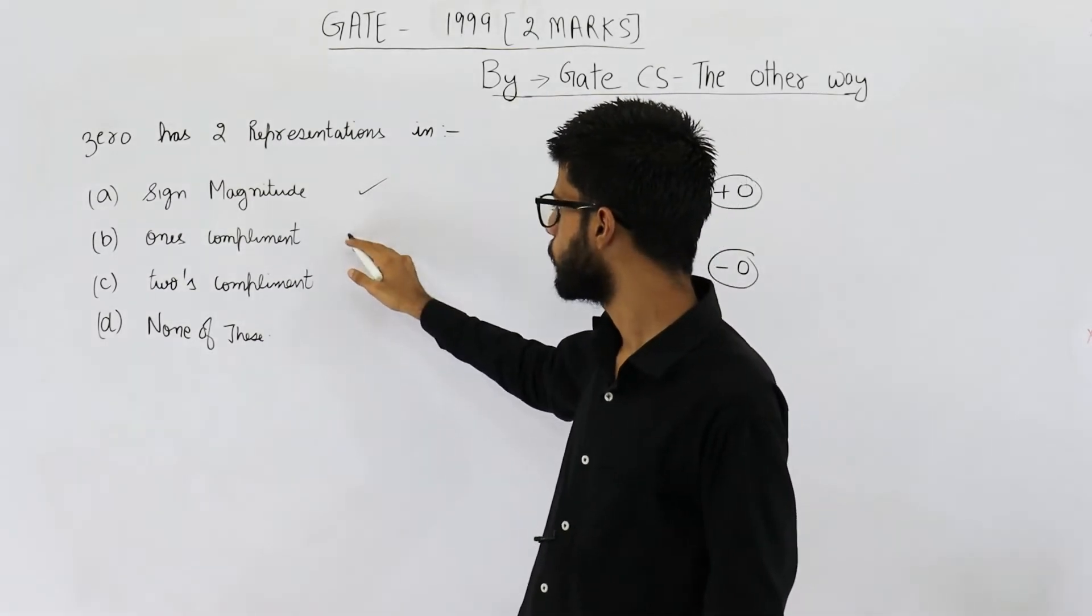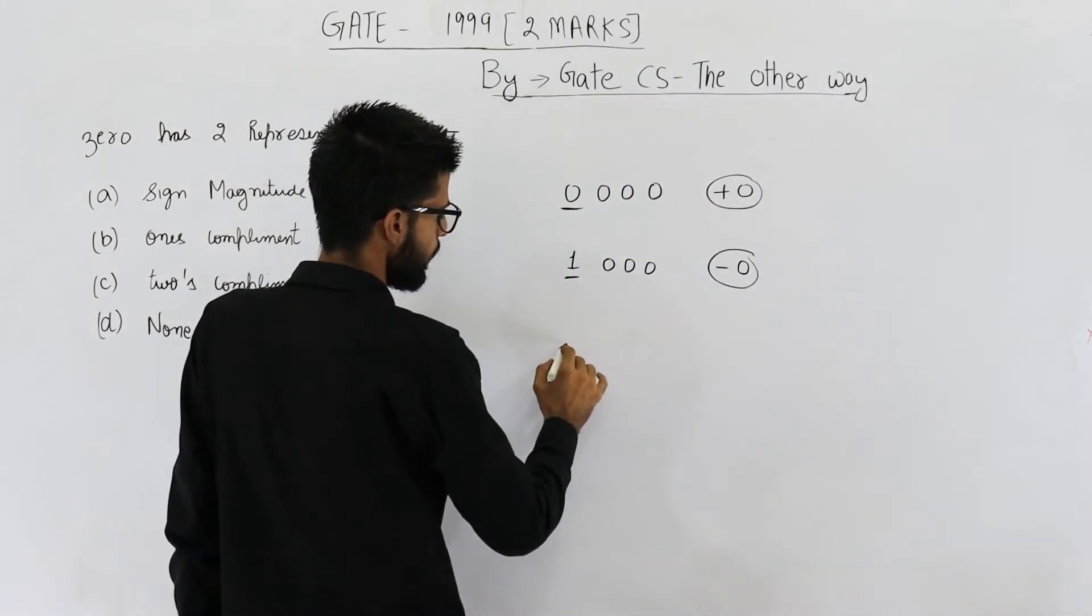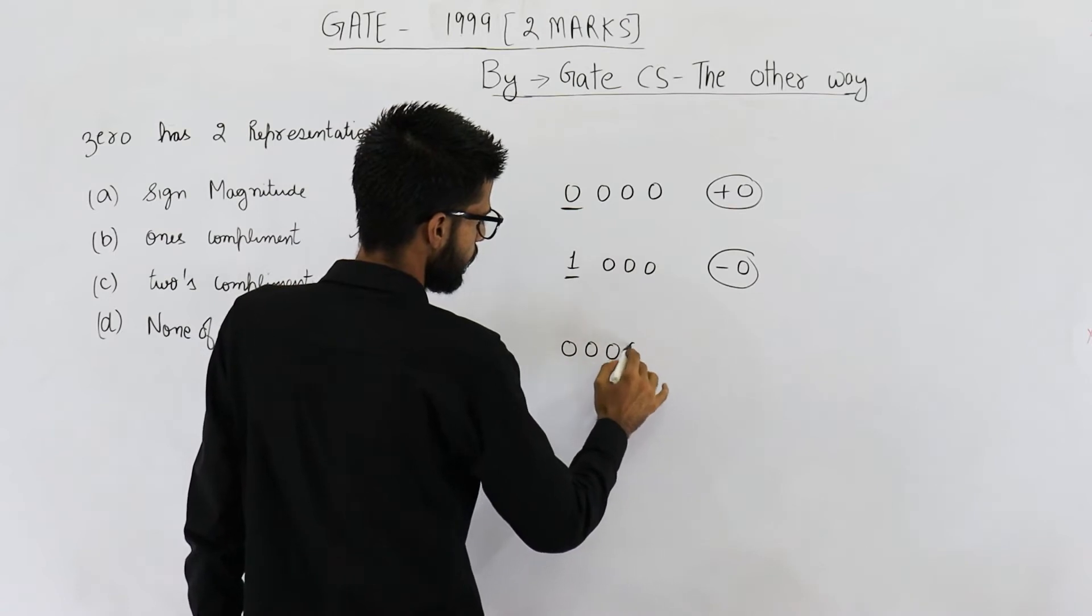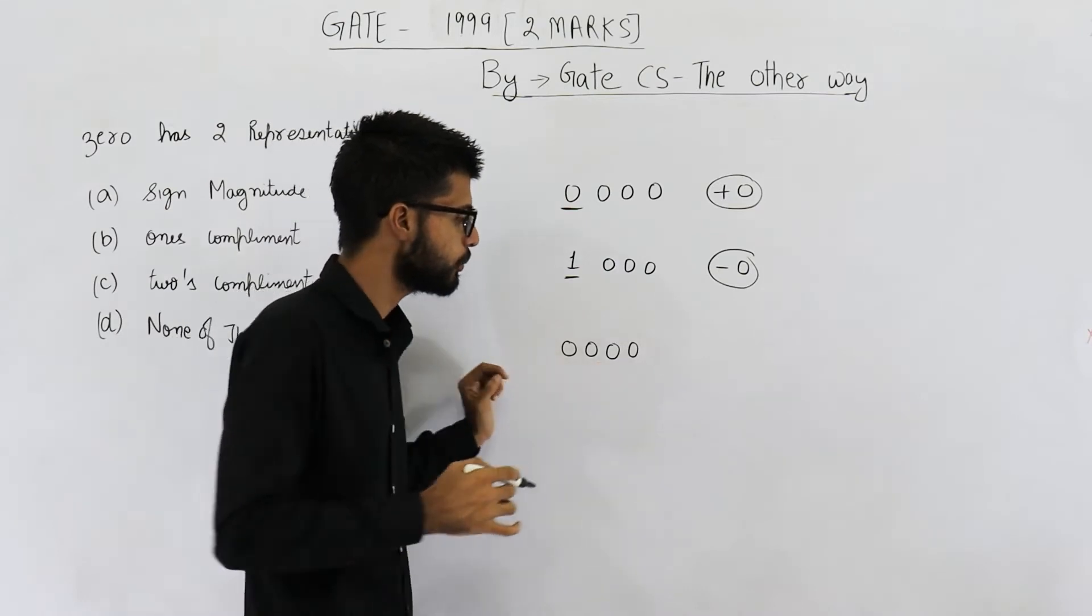Similarly, one's complement will also have two representations for zero. Plus zero will be all zeros. Suppose it's four bit one's complement representation. This is plus zero.